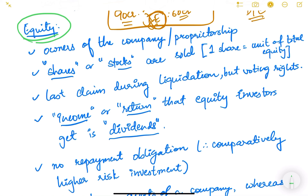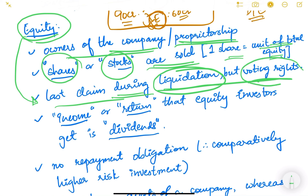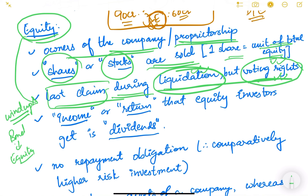Equity holders are basically the owners of the company — they have proprietorship. The unit of equity is known as shares or stocks; one share is one unit of the total equity. Because equity shareholders are owners, they have voting rights and can vote on critical company decisions. However, they have the last claim during liquidation — if a company winds up or liquidates, bondholders are paid first and equity holders are paid last.